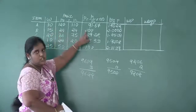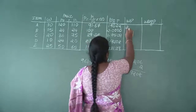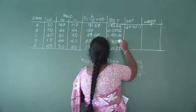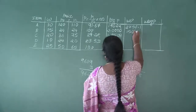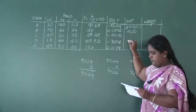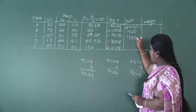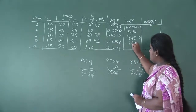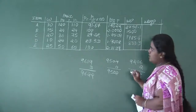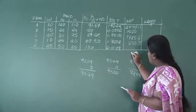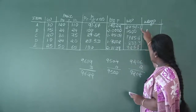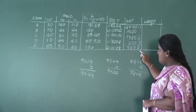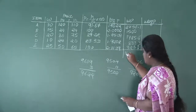Multiply W × P. First: 30 × 91.67 = 2750.1. Next: 15 × 100 = 1500. Then: 20 × 89.28 = 1785.6. Next: 10 × 83.33 = 833.3. Last: 25 × 130 = 3250. Adding all W×P values: 2750.1 + 1500 + 1785.6 + 833.3 + 3250 = 10,119.